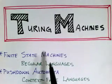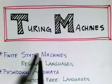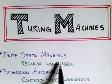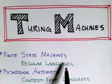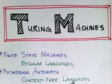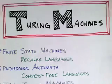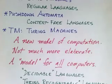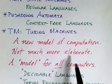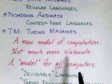With each one of these machines we have a class of languages. For finite state machines we have the regular languages — finite state machines describe regular languages and vice versa. Likewise, each non-deterministic pushdown automata describes a context-free language. With the Turing machine we have another model of computation — not very different from finite state machines and pushdown automata, but just enough different to model some new classes of languages.